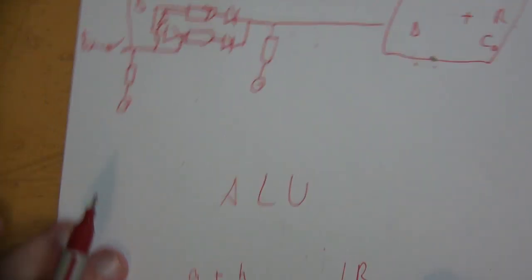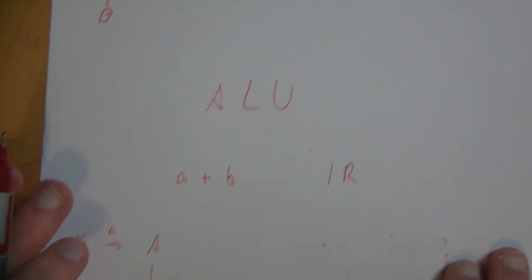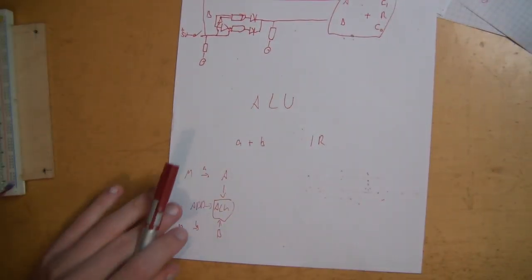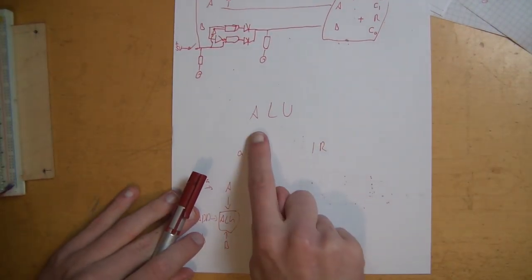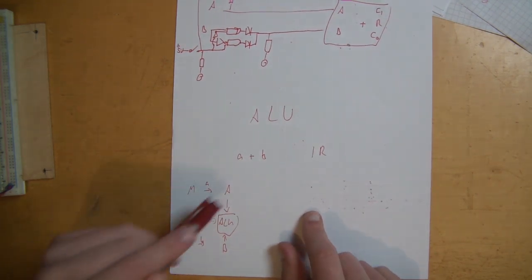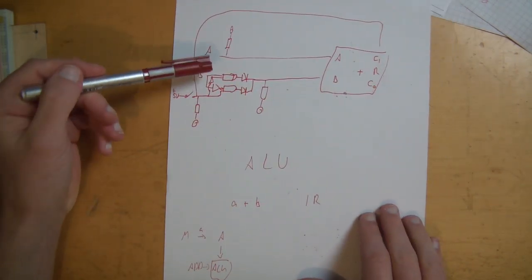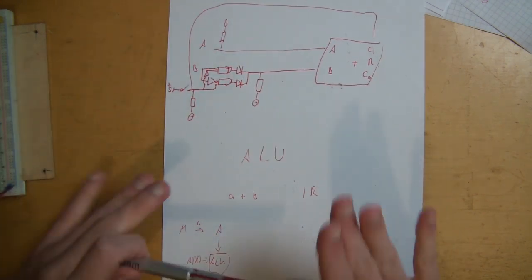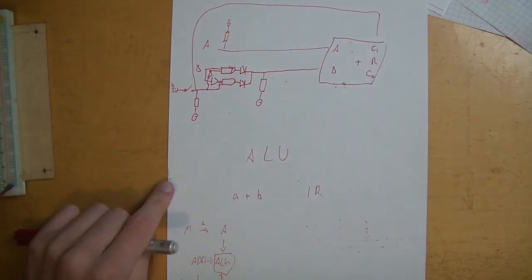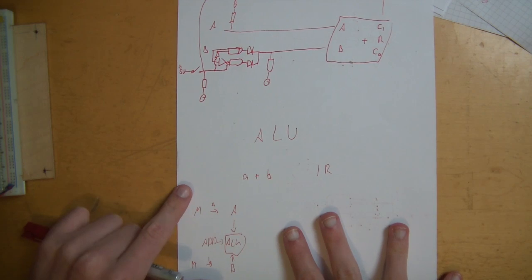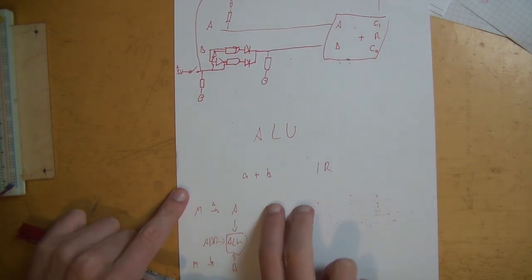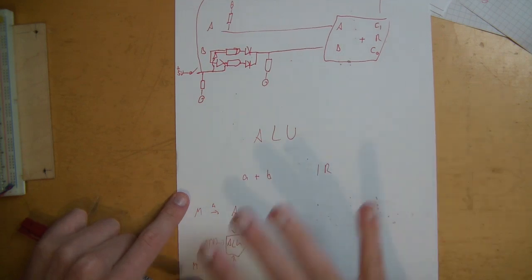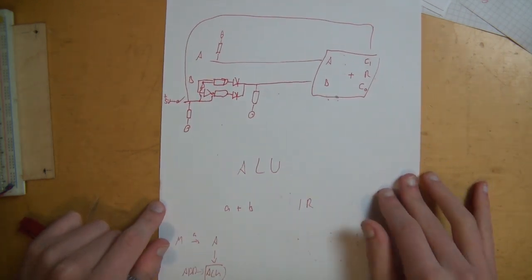That's basically what your computer does. Now normally an ALU has more than just addition and subtraction and it's way more complicated than this. It also has logic functions normally, which is the reason it's called an arithmetic logic unit. Right now it's only an arithmetic unit because it can only do addition and subtraction. But for the simplest possible computer, addition and subtraction is all you need to do basically everything you want.